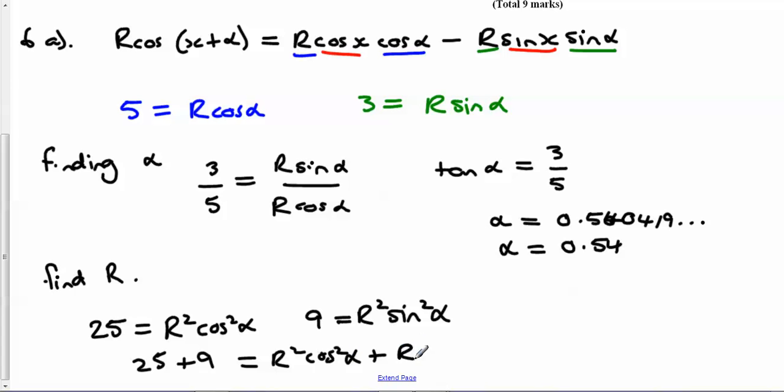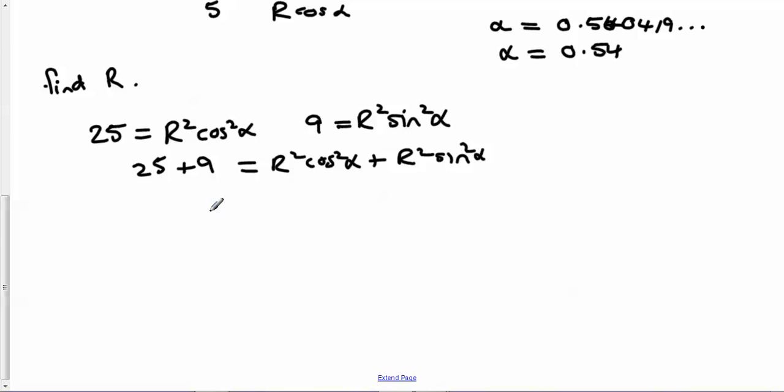So that's 34, and then if you factorize the R squared, you end up with cos squared alpha plus sin squared alpha, which is 1. So actually R squared is 34, so R ends up being the square root of 34.